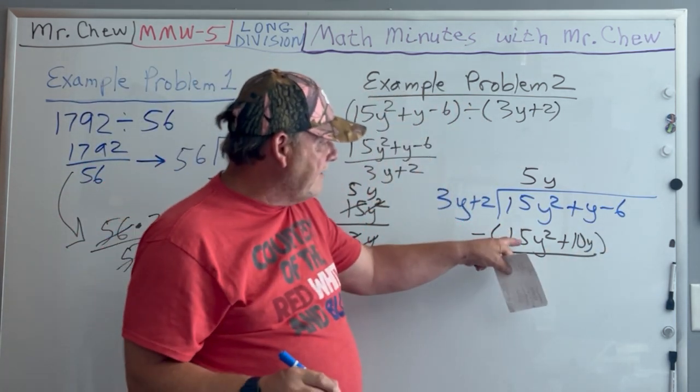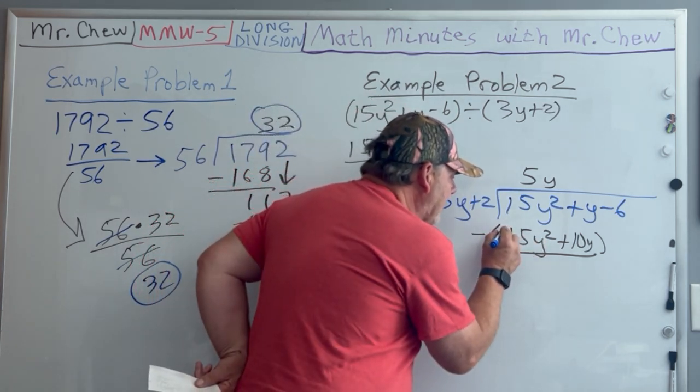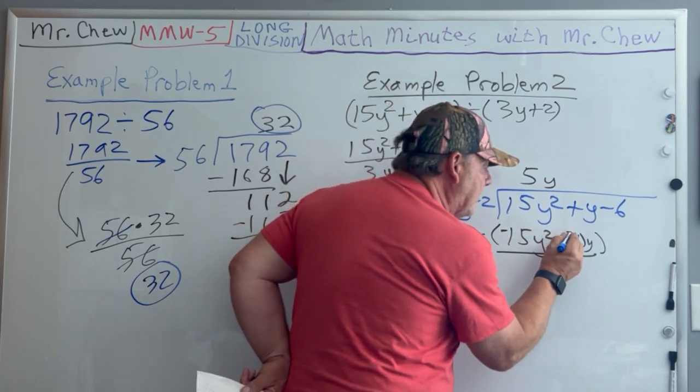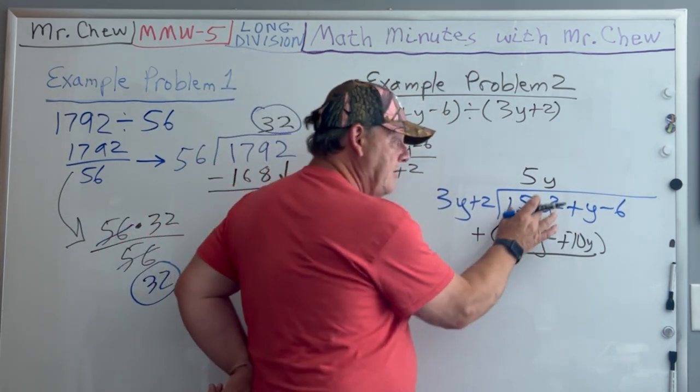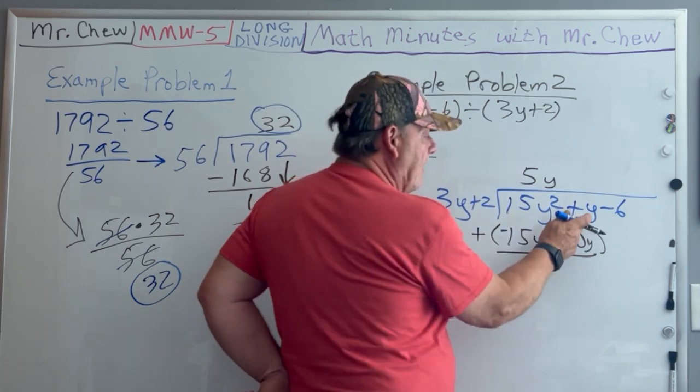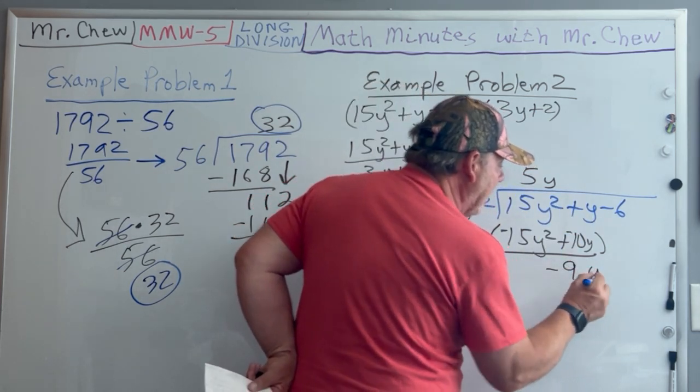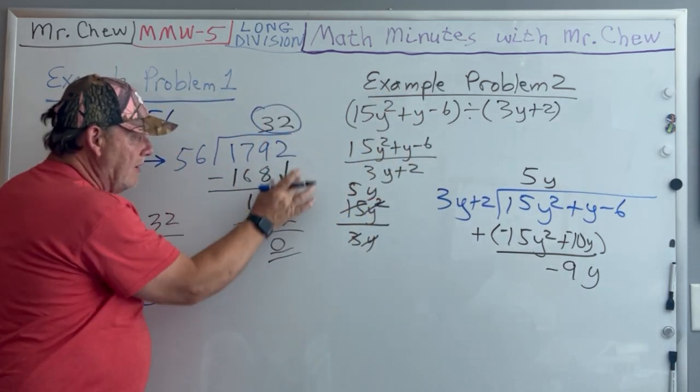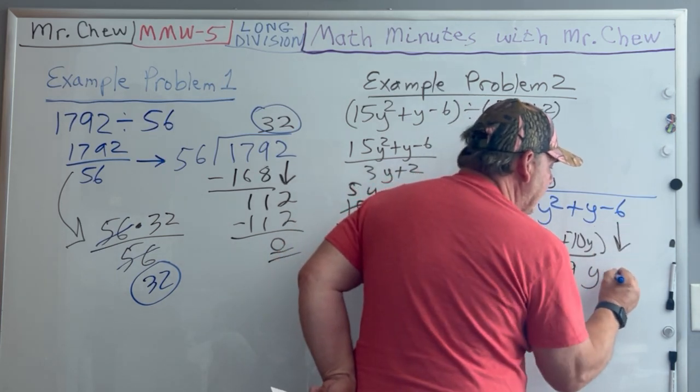If I subtract 15y² that becomes -15y². If I subtract 10y it becomes -10y. Now I'm going to add them. These go away, which is what I want, and y + (-10y) is -9y. We brought down the 2 over there, now we bring down the -6.